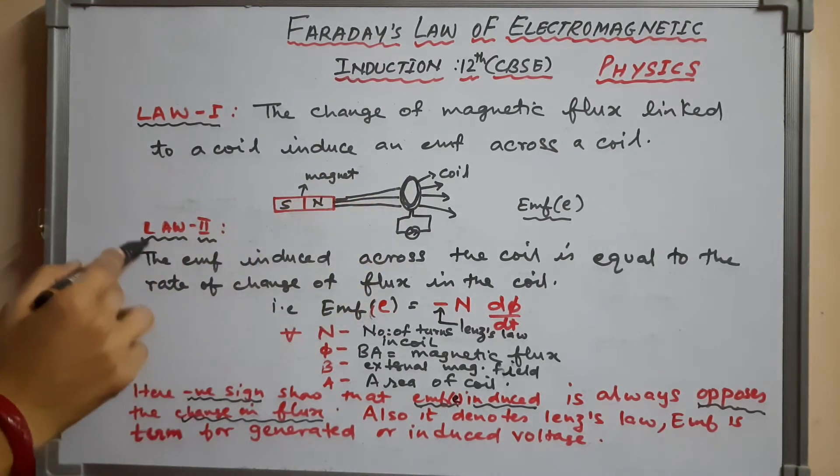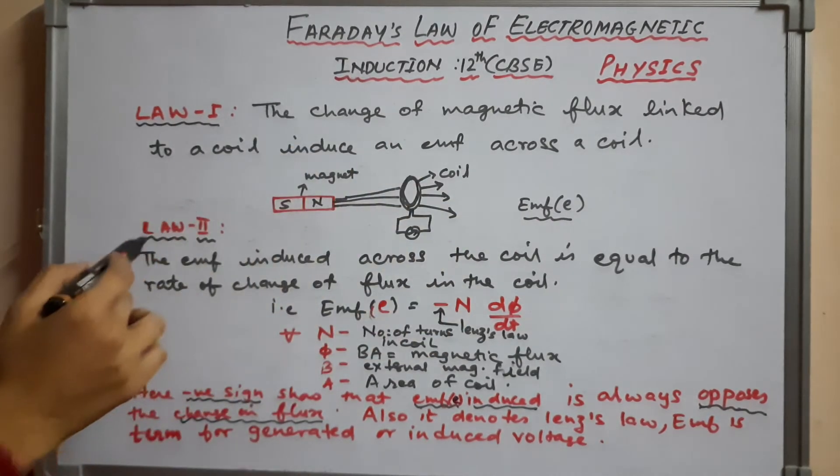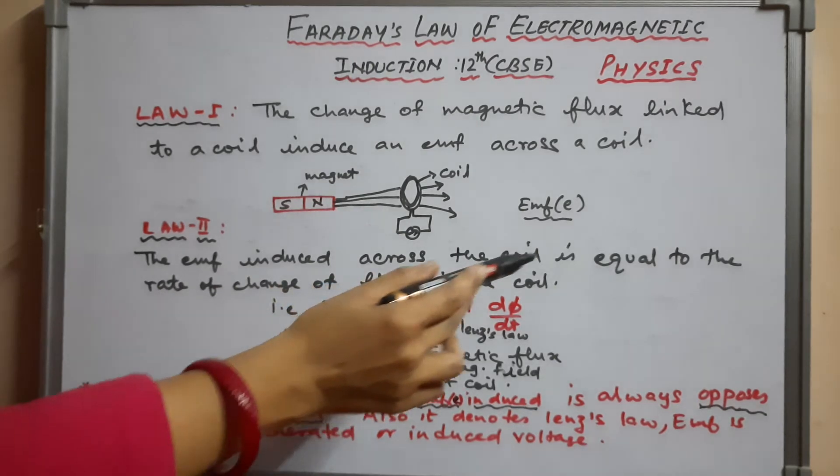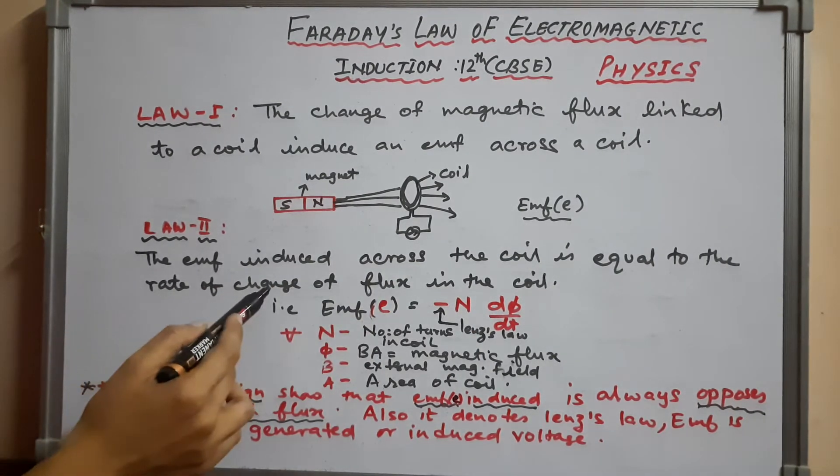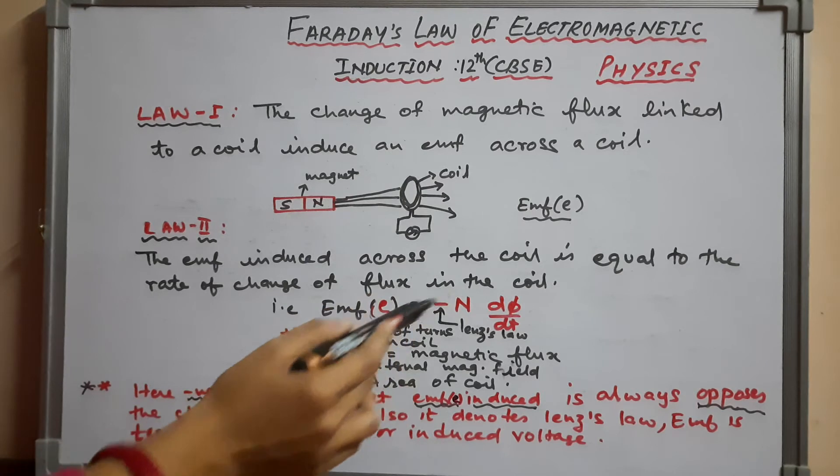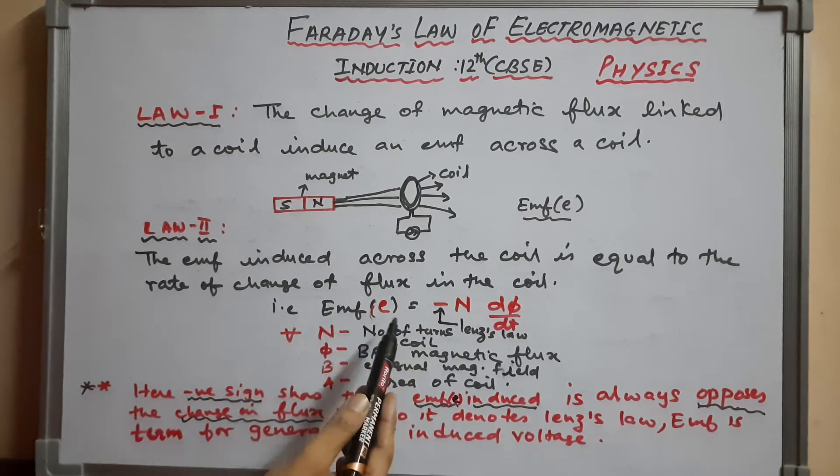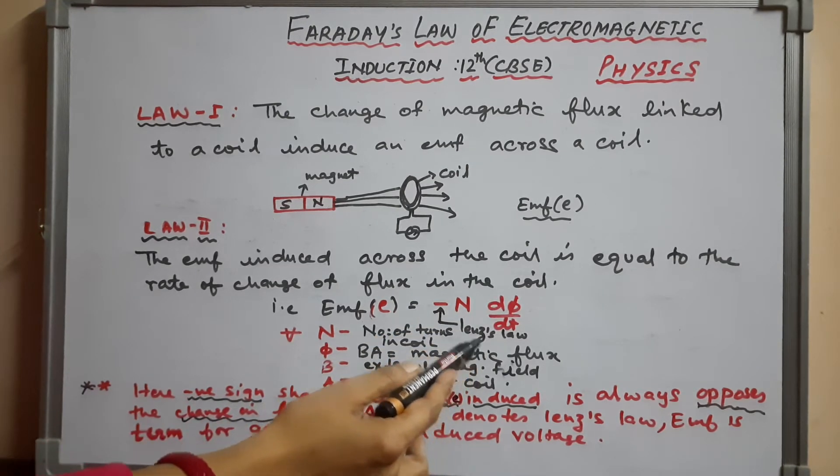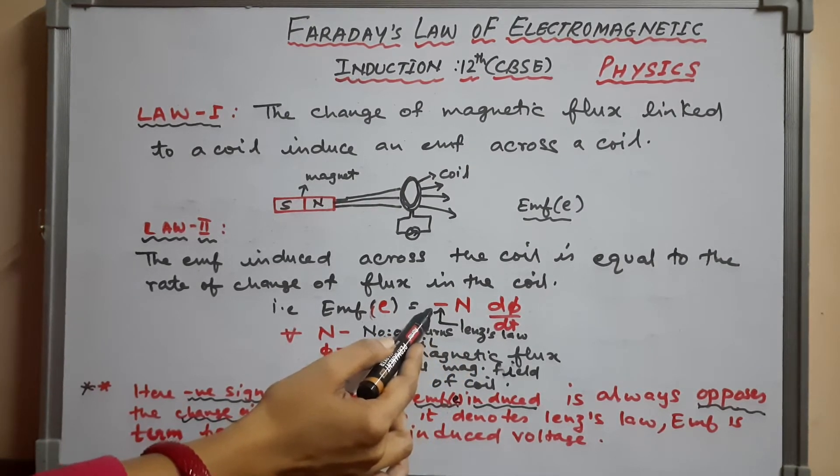Law 2: The EMF induced across the coil is equal to the rate of change of flux in the coil. So EMF (e) equals minus N dφ/dt.